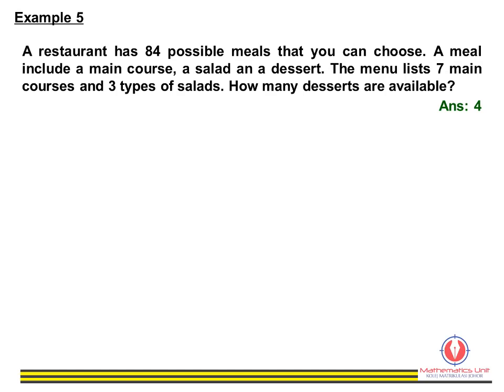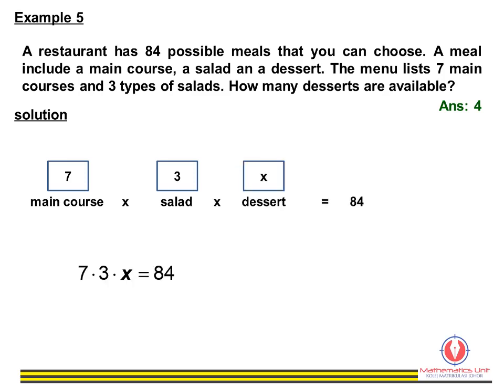Example 5: a complete meal in a restaurant consists of a main course, a plate of salad, and a plate of dessert. There are seven main courses and three varieties of salad. If there are 84 possible combinations of meals, then seven times three times x equals 84, so x equals four — there are four types of desserts available.